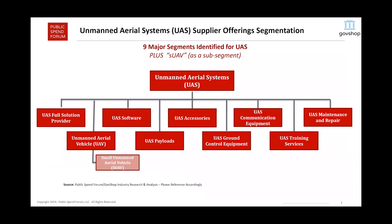For that reason, we've actually delineated this industry — the UAS industry — into about nine major segments. There's no one right way to delineate the industry. We came at this from the perspective of looking at it from your needs as buyers, as well as the supply market. On the far left, we have the UAS full solution providers. That basically means those suppliers cover a full spectrum — they provide the drones, communications equipment, ground control equipment, and very likely maintenance and repair as well.